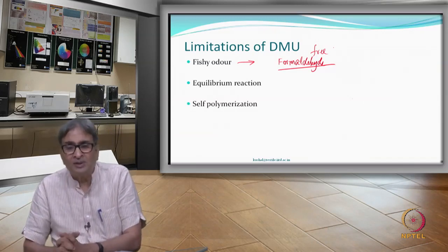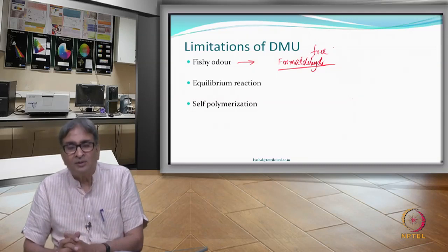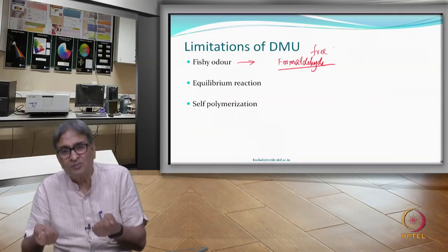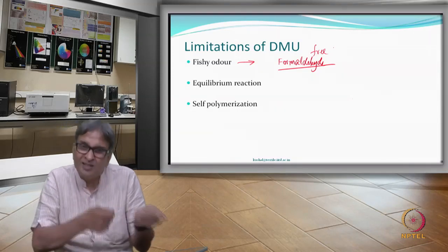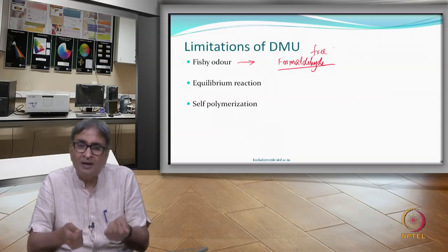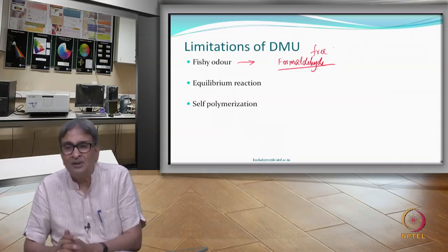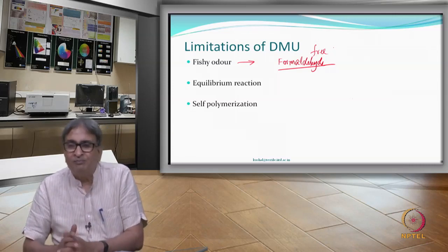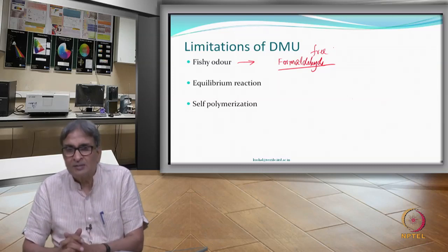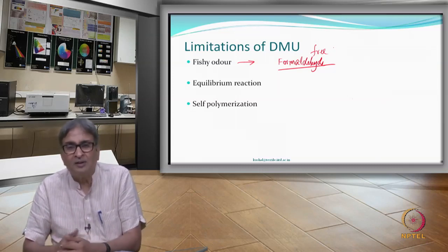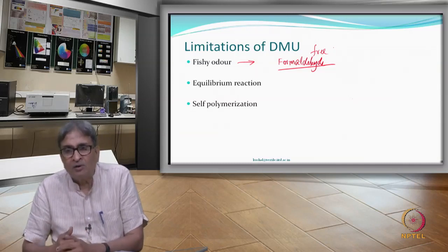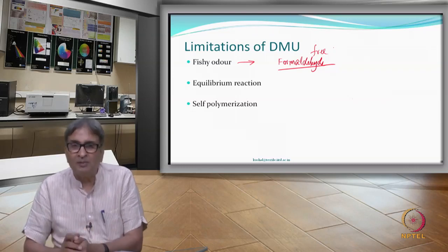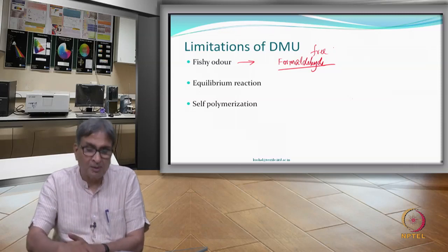Also this compound, being a simple linear chain, was found to self-polymerize — instead of just cross-linking with cellulose, it could react with itself and polymerize. If a film-like formation happens, people observed stiffness — the fabric became stiffer compared to when untreated. So these became limitations and people wanted to find a solution.